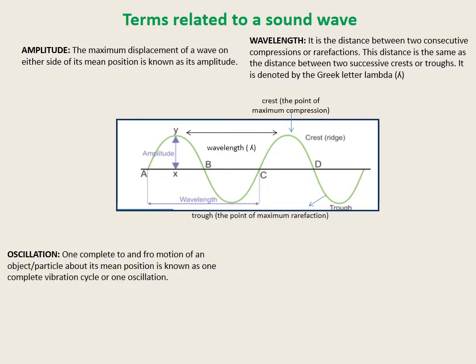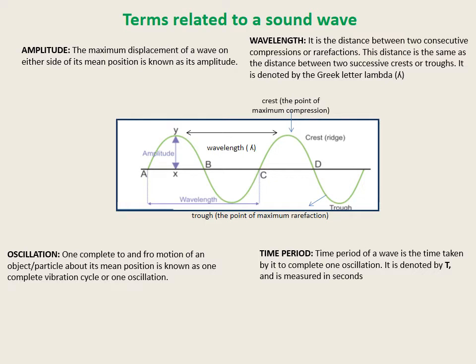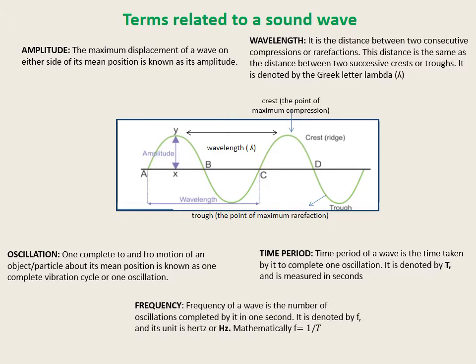One complete to-and-fro motion of an object or particle about its mean position is known as one complete vibration cycle or one oscillation. Time period of a wave is the time taken by it to complete one oscillation. It is denoted by letter T and is measured in seconds. Frequency of a wave is the number of oscillations completed by it in one second. It is denoted by F and its unit is Hertz (Hz). Mathematically, F equals 1 divided by T.